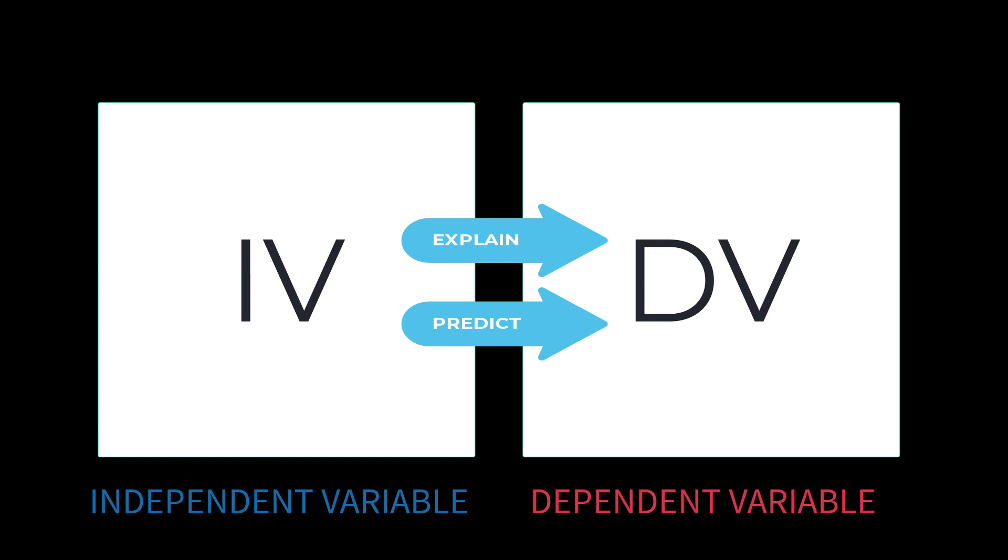In research, the independent variable is also important because this is the variable the researcher manipulates in the research study. This is the variable that does the influencing. Some examples will help us understand these two variables, so let's start by looking at examples of how the independent and dependent variable operate in difference testing.